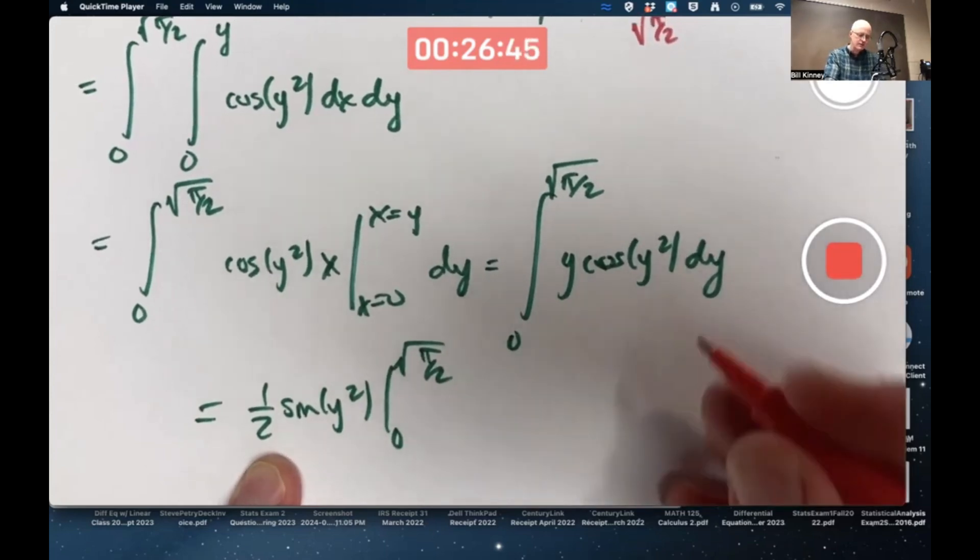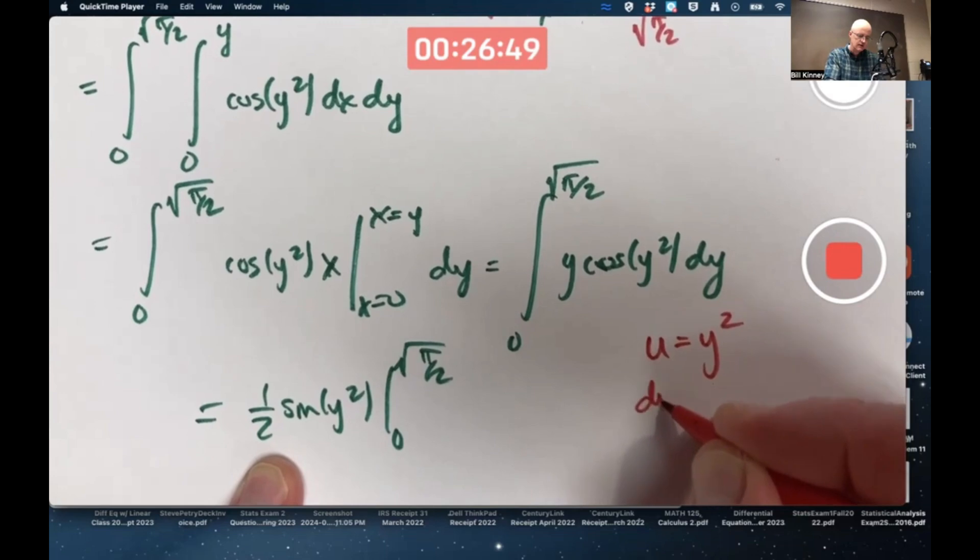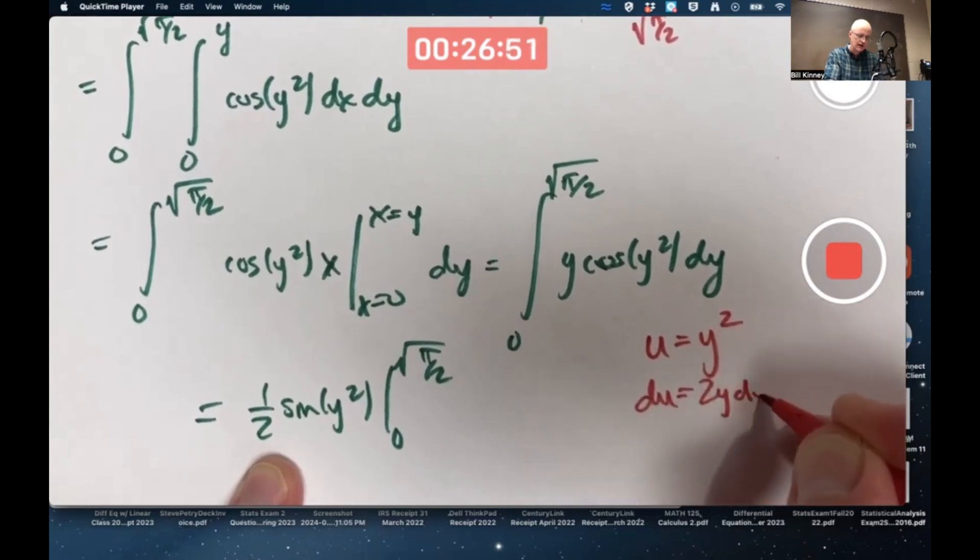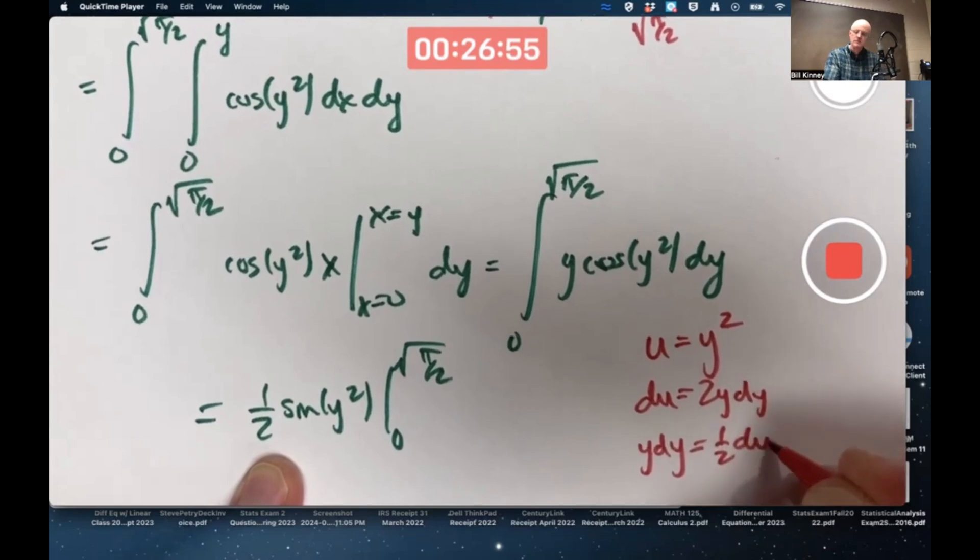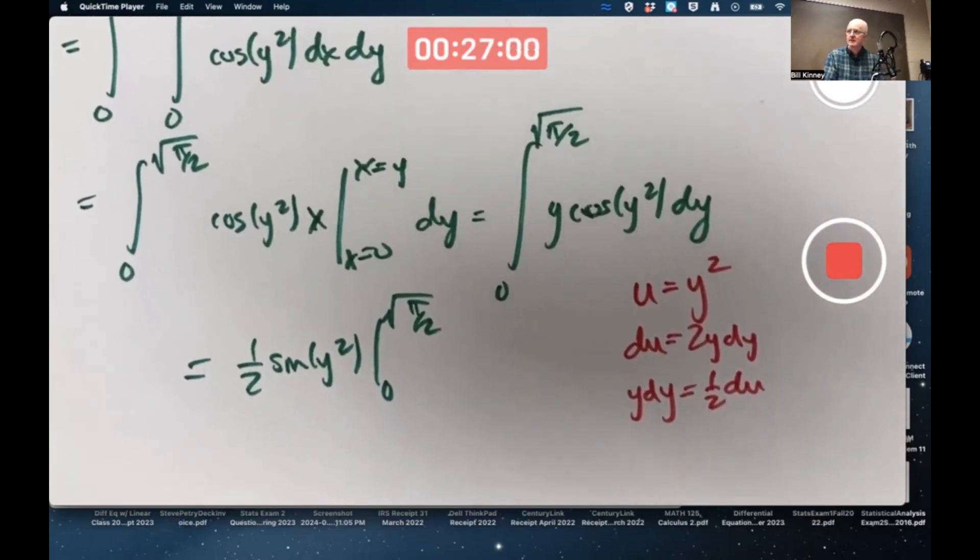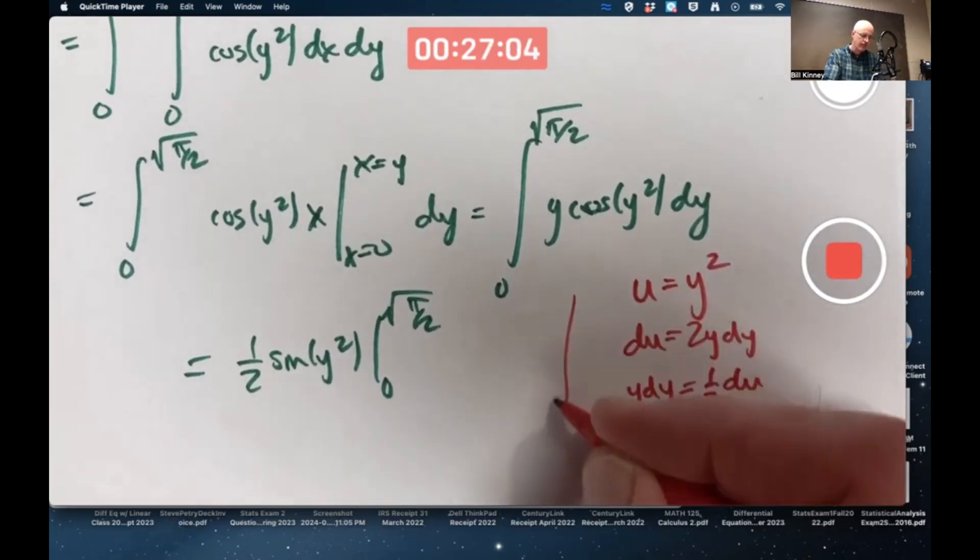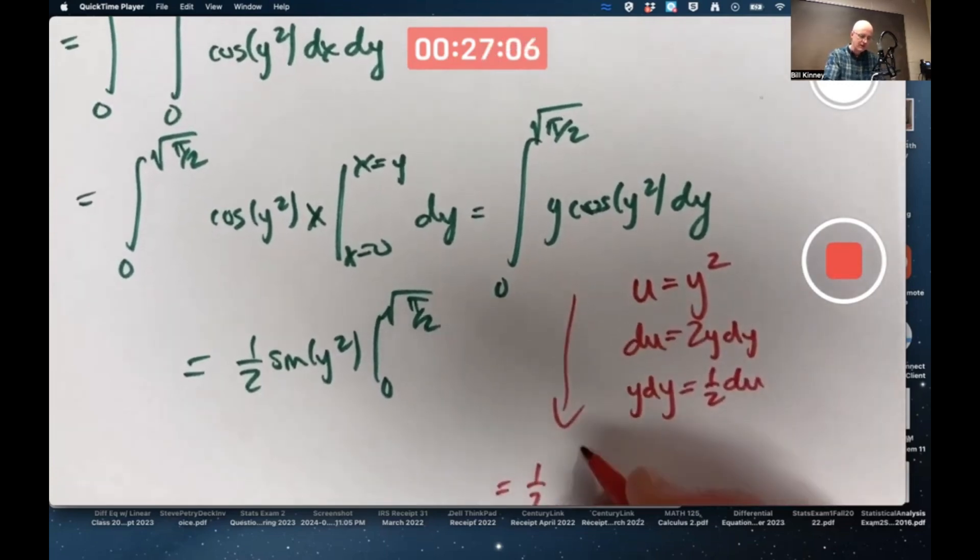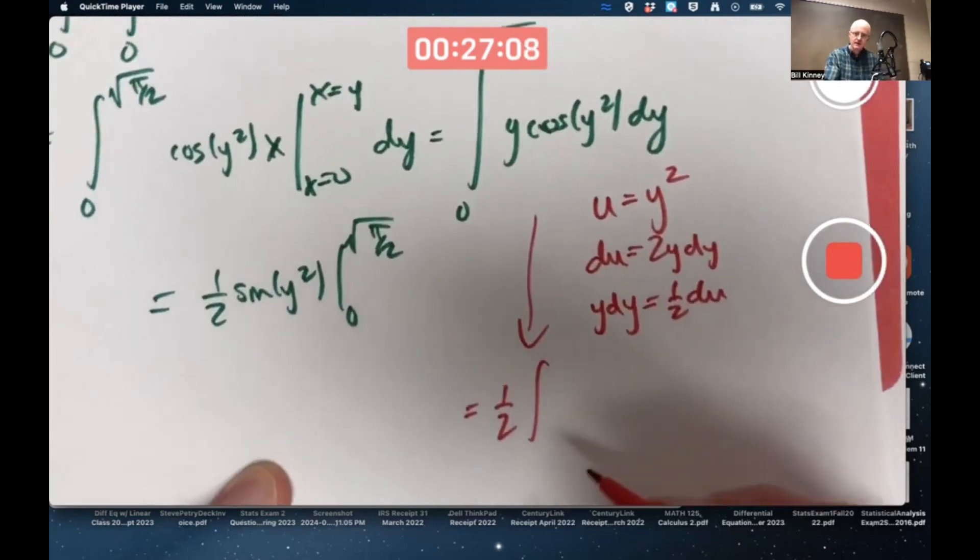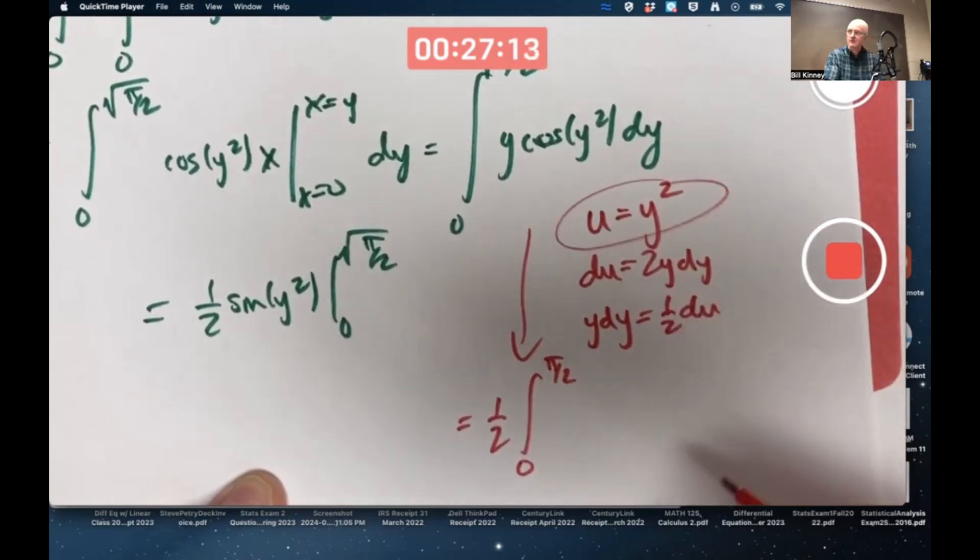If you want to use a substitution, u equals y squared works. du would be 2y dy, so y dy would be 1 half du. If you do substitute such a substitution, you actually can stay with u. But if you do that, you have to change the limits of integration to zero to pi over two instead of zero to square root of pi over two because of using that equation.